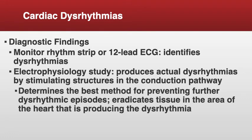The best way to confirm or diagnose a cardiac dysrhythmia is with a monitor strip or a 12-lead EKG. Some clients may wear a Holter monitor or 24-hour monitor at home to identify the dysrhythmia. We can also do an EP study — electrical physiology study — where the doctor reproduces the dysrhythmia by stimulating structures within the conduction pathway, and in doing so can determine the best treatment method, which could include eradication of tissue, medication changes, or cardioversion.